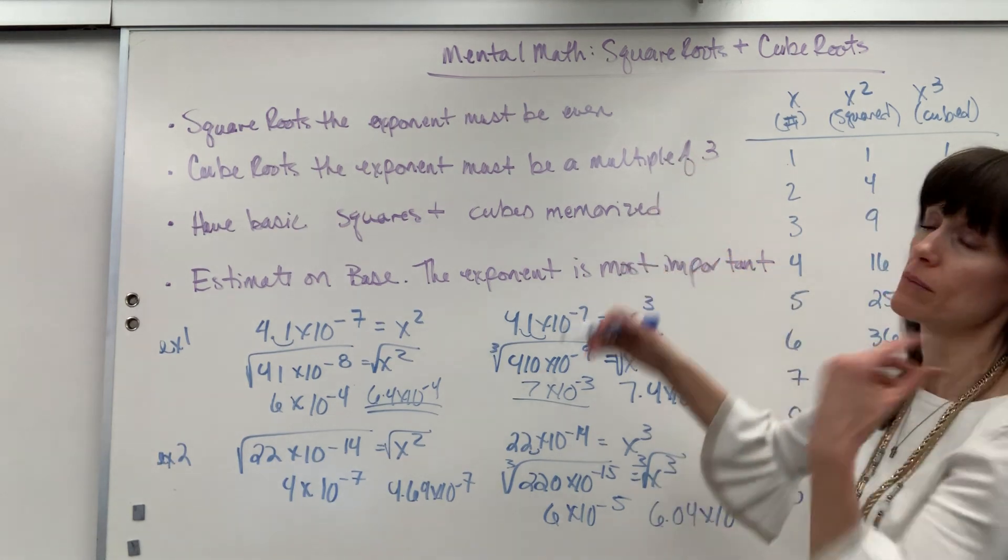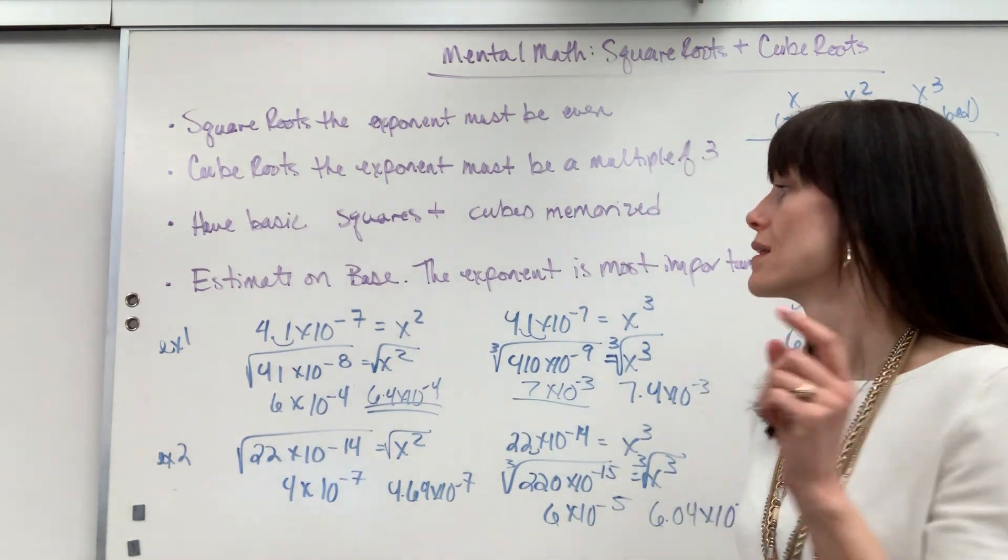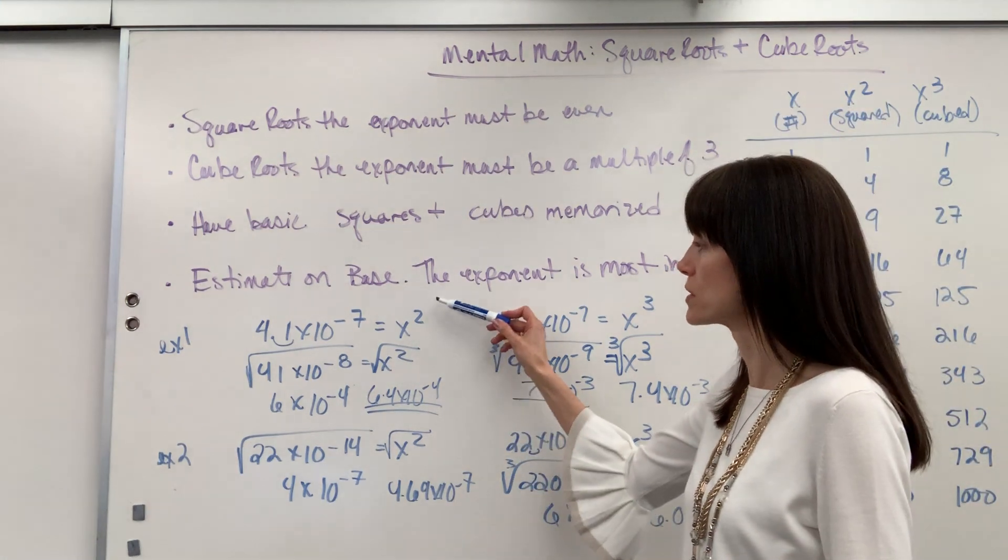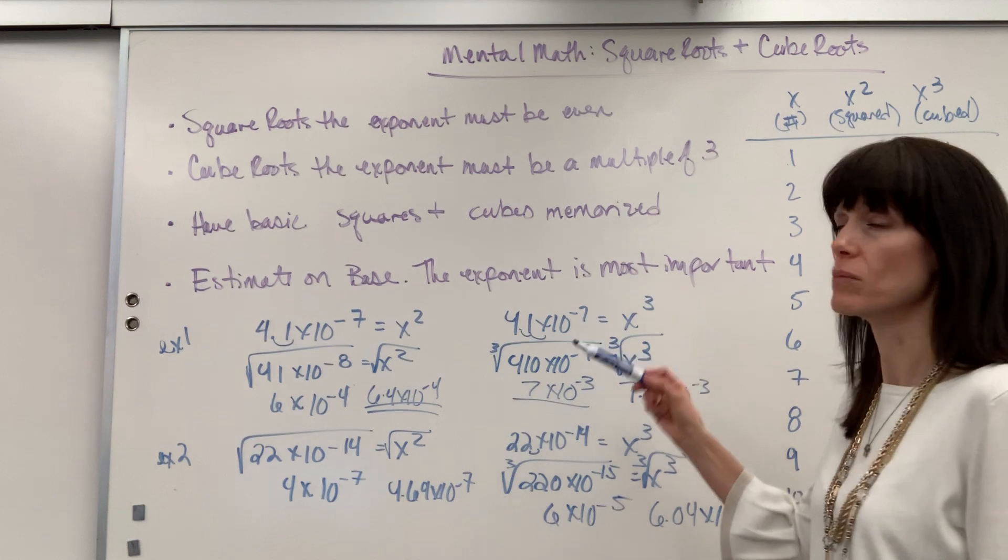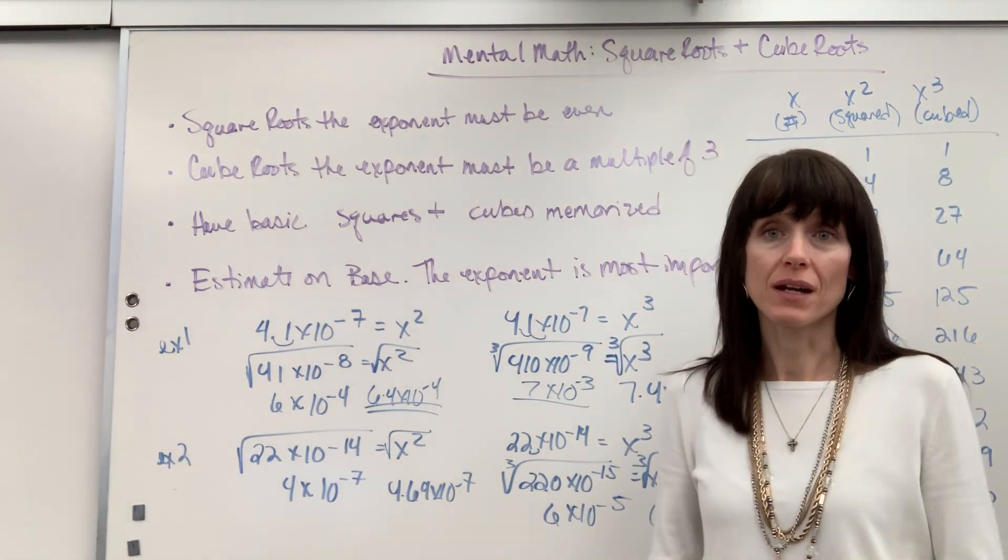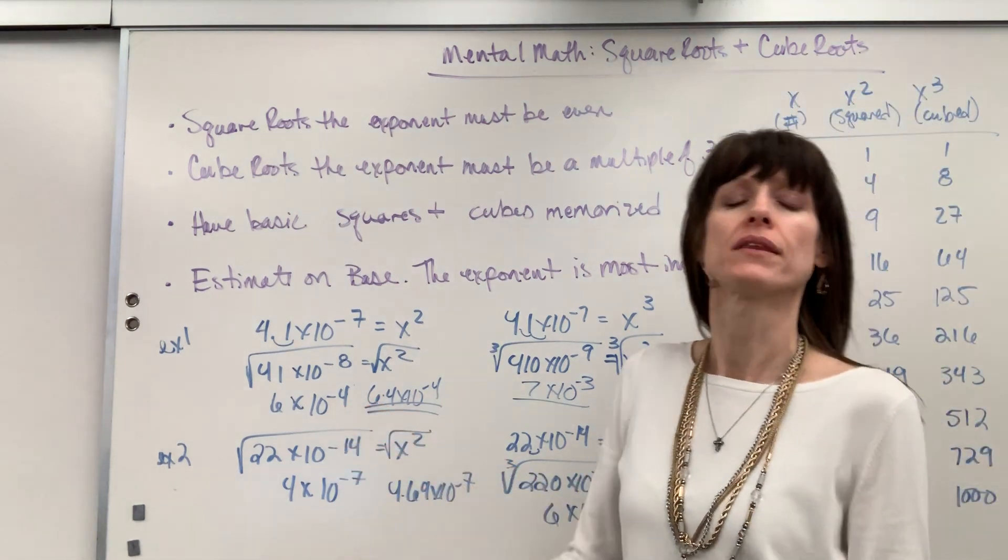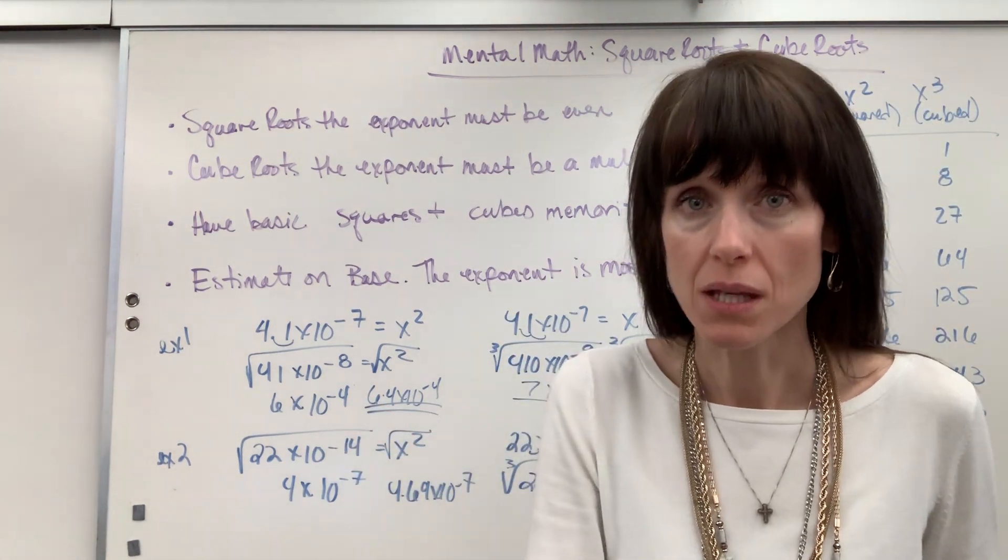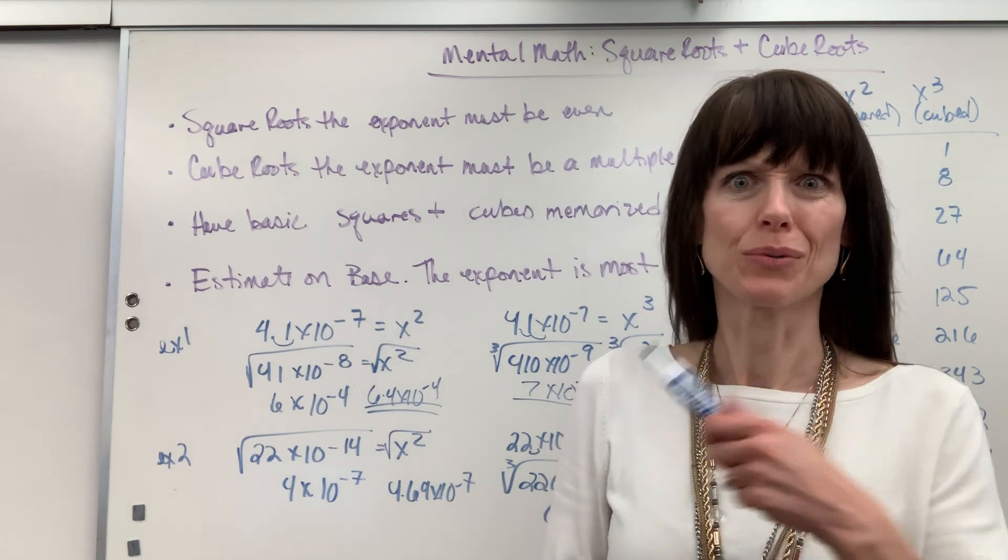So that is how you do mental math on square roots and cube roots. The key is the exponent. For squares, it's got to be even. For cubes, it has to be a multiple of 3. And from there, you're great. All right, good work. If you have other questions on mental math, look under Basics for the playlist. Have a really good day. Good work. Thanks.